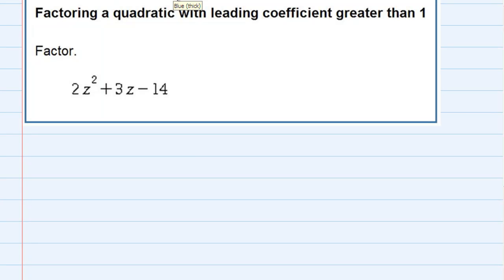Factoring a quadratic with leading coefficient greater than 1, we're going to do the same problem we did earlier, but this time we're going to do it by the trial and error method. So trial and error, and you'll see why it has that name.